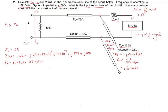So beta*L = 1.2*pi. You can use radians or degrees. In radians, tangent of 1.2*pi gives 0.733. In degrees, 1.2*pi times 180/pi gives 216 degrees, and tangent of 216 degrees is also 0.73.